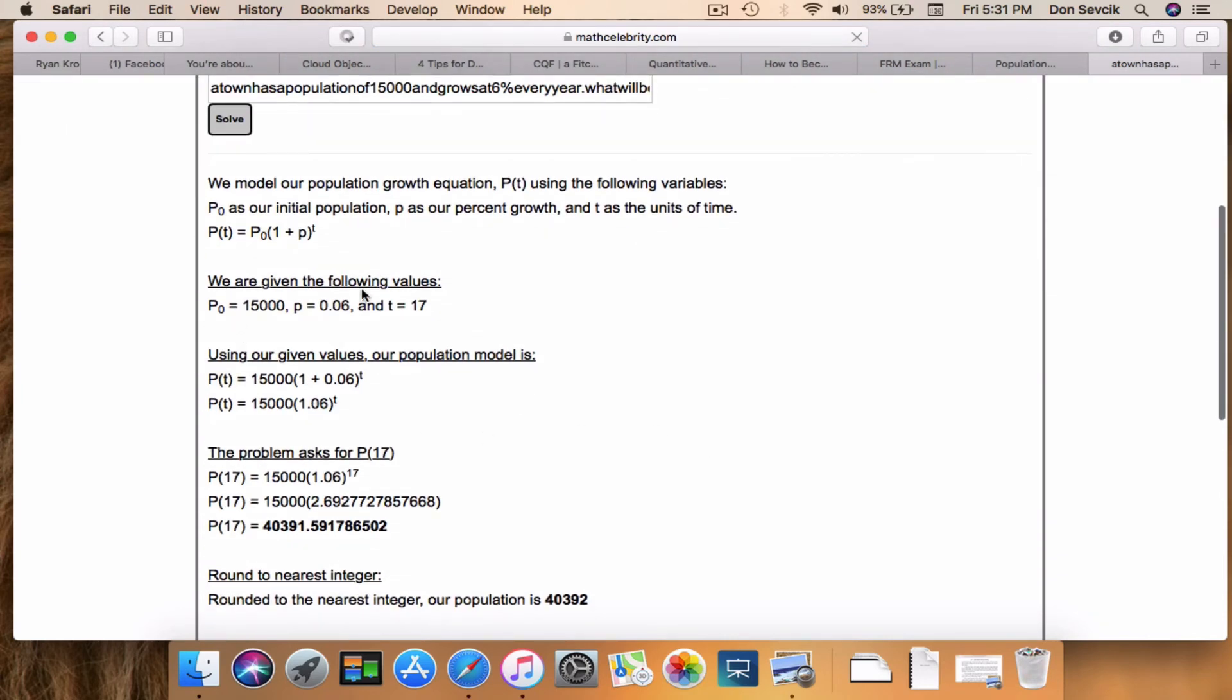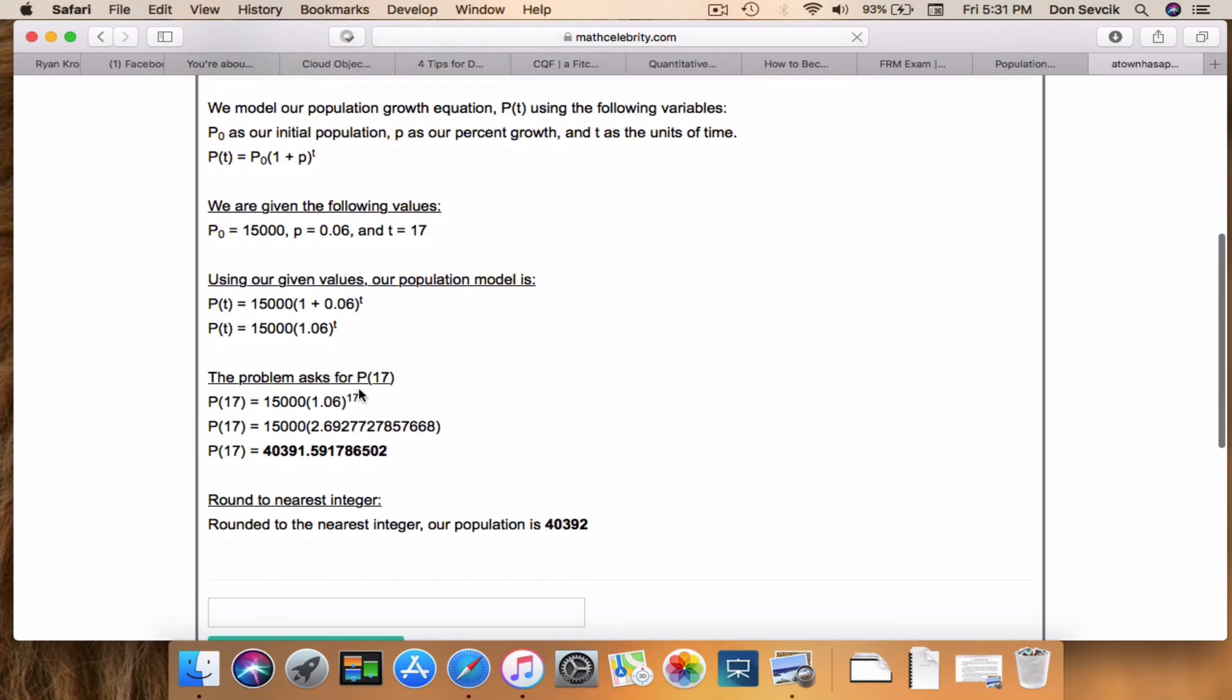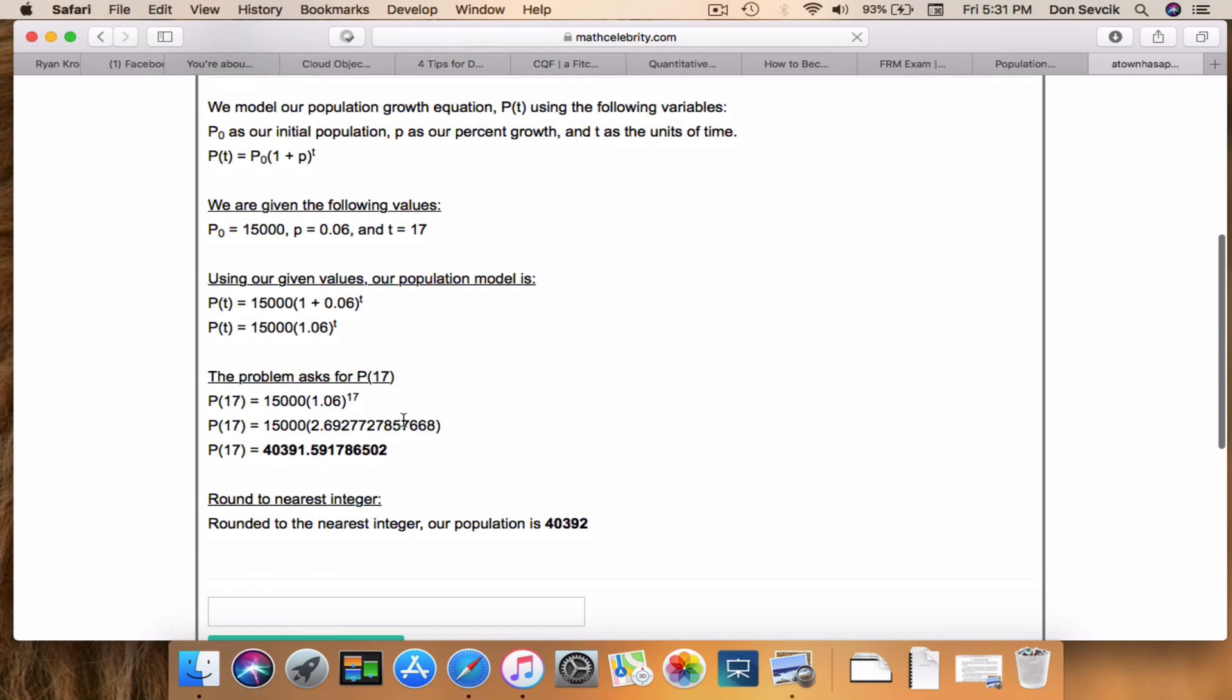So 15,000 initial population, 6% growth rate, and time of 17. It runs through the formula, calculates your growth factor, and here is your new population. So what's nice about this is you can swap out numbers, and it'll just walk you through the exact same step-by-step formula to get you to your new population.